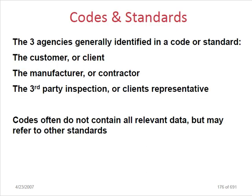Code and standard - three agencies are generally identified in the code and standard: the customer or client, the manufacturer or contractor, and the third-party inspector or client representative. Codes often do not contain all relevant data but may refer to other standards.